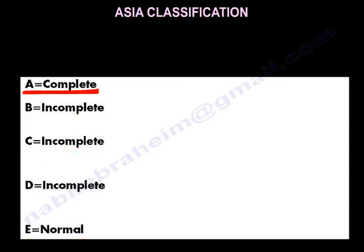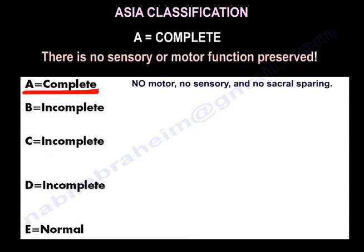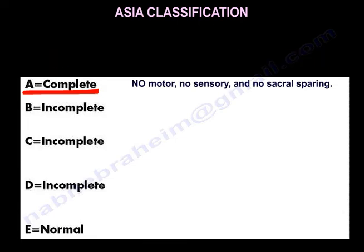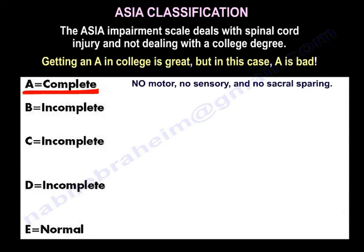A means complete spinal cord injury — there is no sensory or motor function preserved. If you are in college and you get an A, you are doing very well. But if you have a spinal cord injury and you have an ASIA A, that's not very good. So ASIA A is bad.